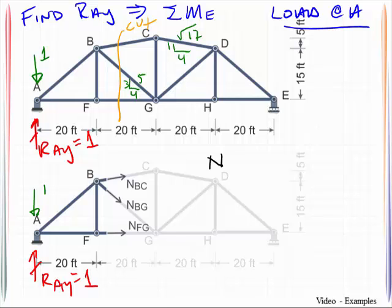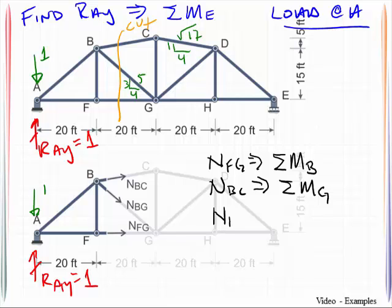I can solve for NFG if I sum moments about point B. I can then solve for NBC if I sum moments about point G. I can then solve for NBG if I sum forces in the Y direction.